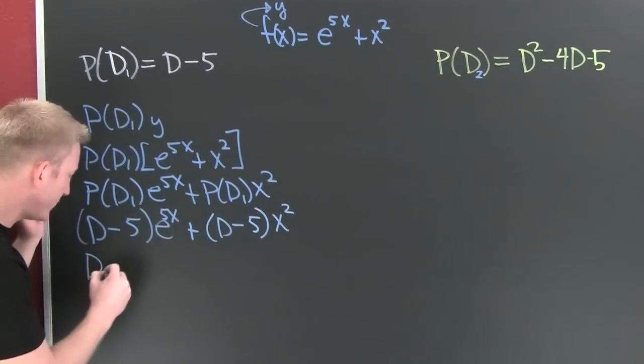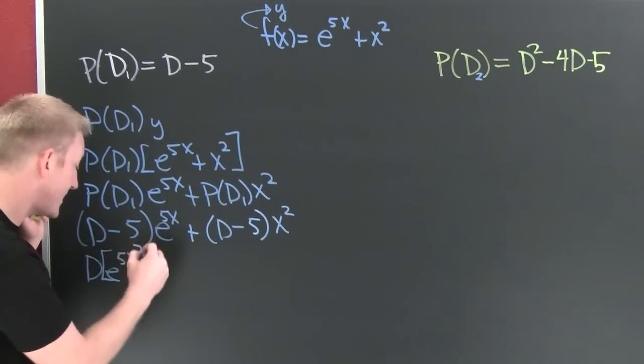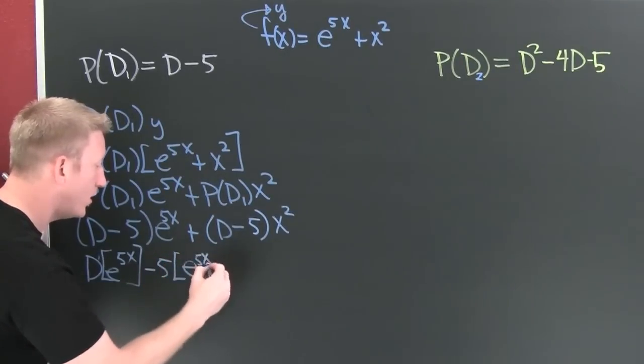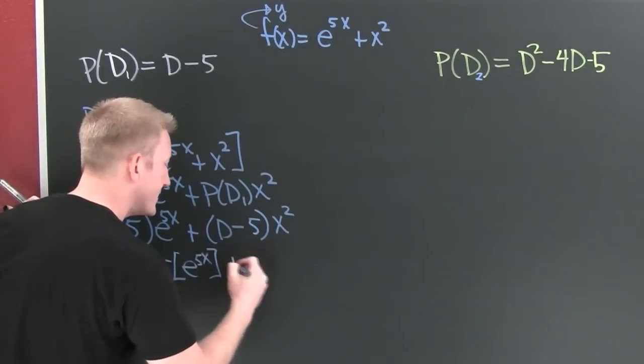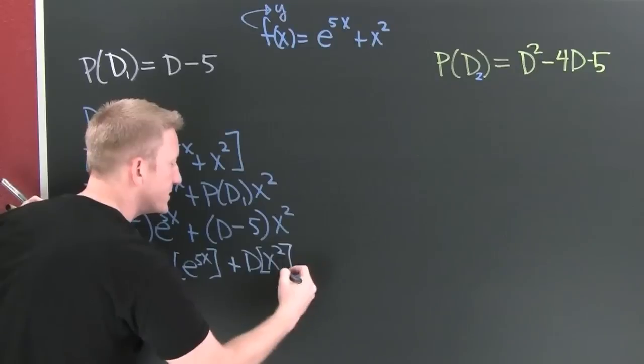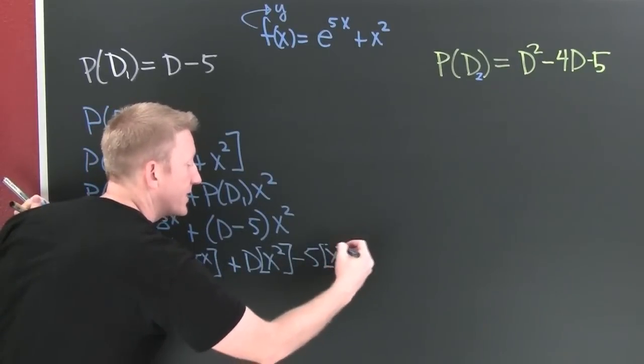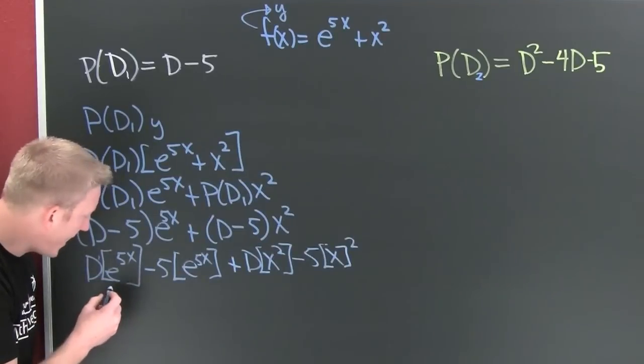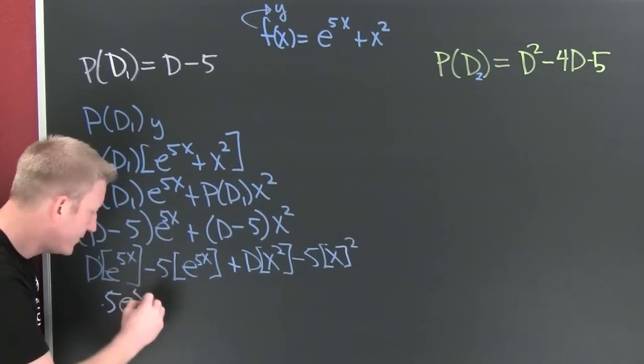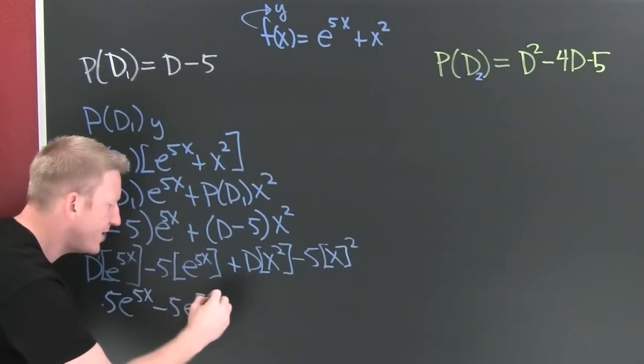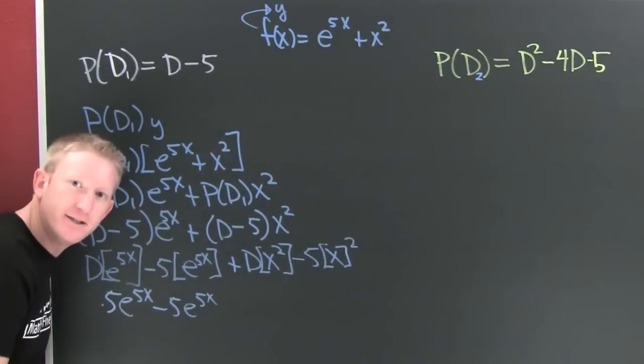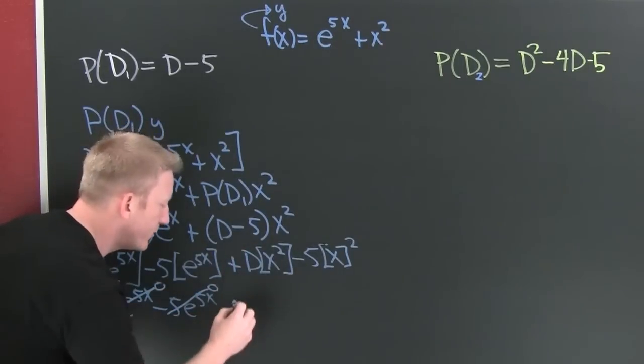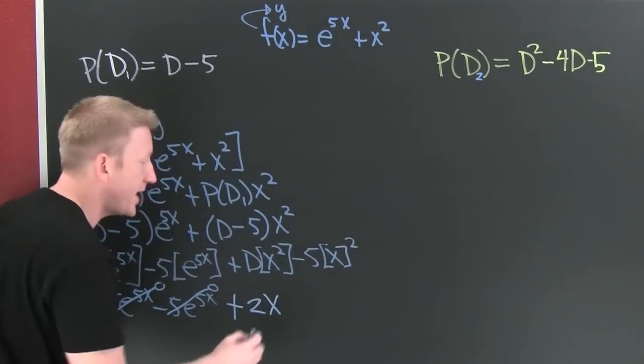One derivative of e to the 5x—this says take one derivative of e to the 5x and subtract off five times e to the 5x. Then this is plus one derivative of x squared minus five times that very same x squared. One derivative of e to the 5x is 5e to the 5x minus 5e to the 5x. Look what happened to that term—it just got annihilated. They're additive inverses so they go to zero. One derivative of this is plus 2x minus five times x squared.